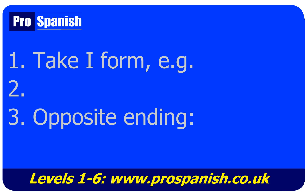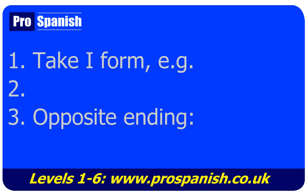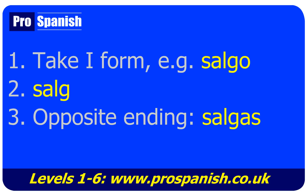Let's try one more: 'you go out' subjunctive. 'I go out' is SALGO, and the infinitive is SALIR. Normally 'you go out' would be SALES, ending in ES. Take the opposite, which is AS — SALGAS. SALGAS is the subjunctive for 'you leave.'